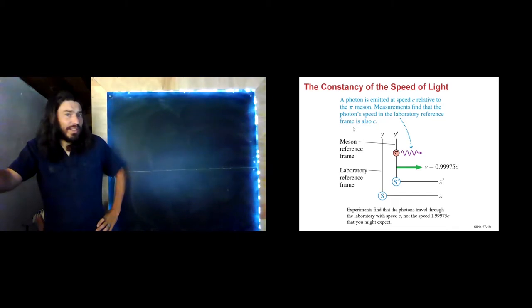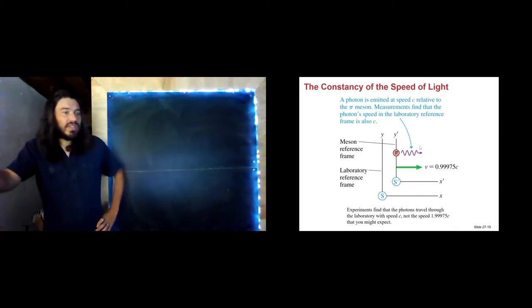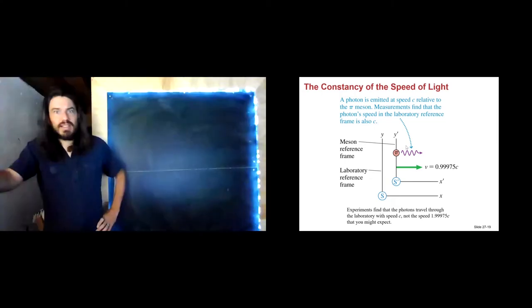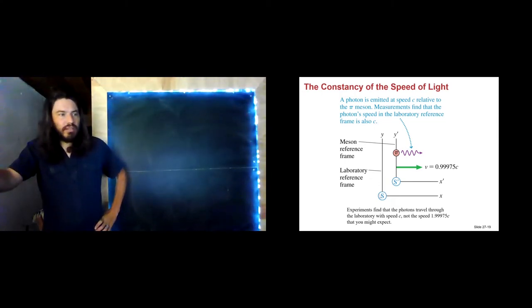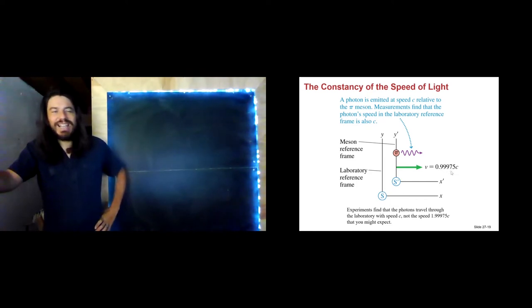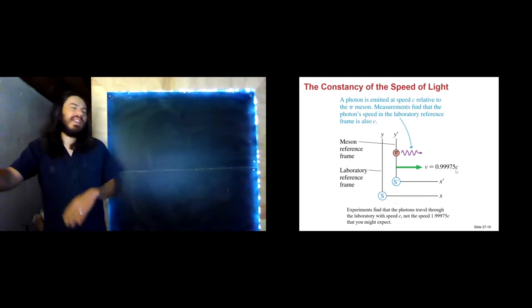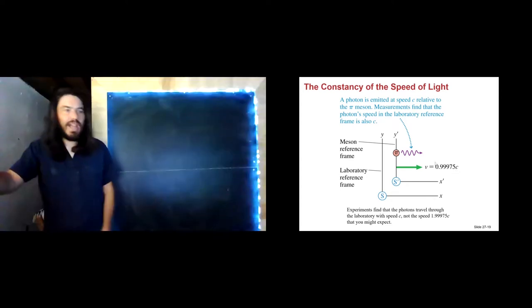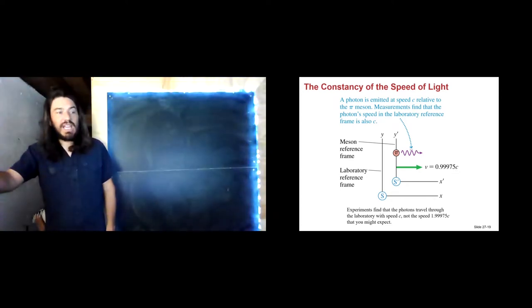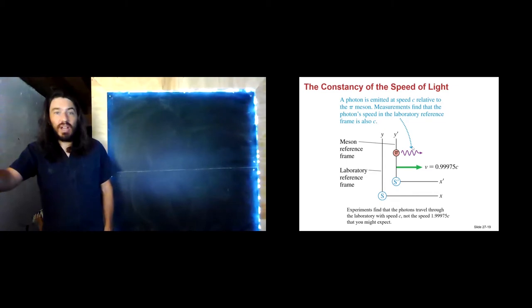We can do experiments on this — this is reality. Mesons are tiny particles that physicists study all the time. In the laboratory reference frame, we see that the meson is traveling at 0.999975C, very close to the speed of light. And if this meson emits a photon, which can happen as it decays into something else,